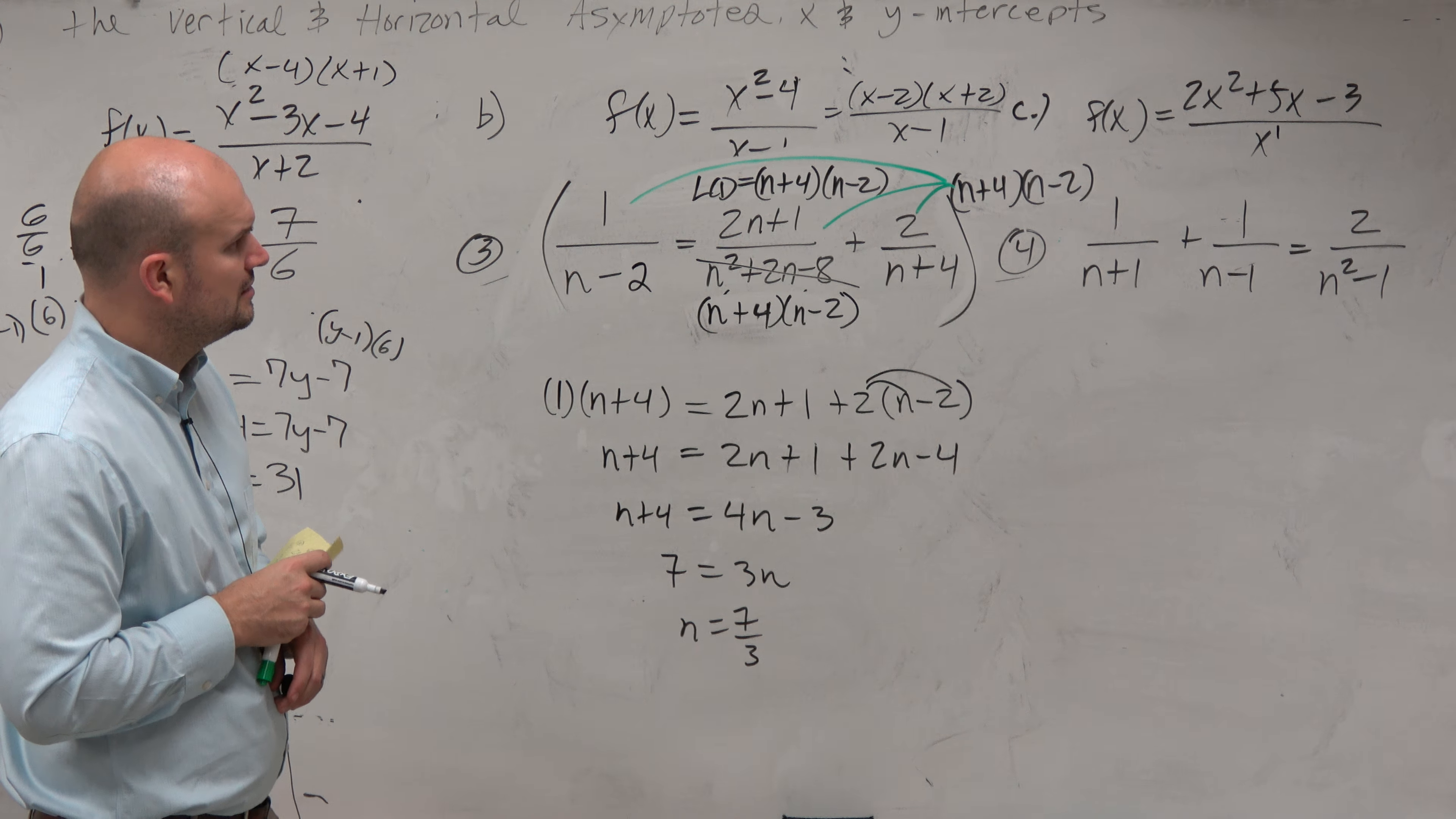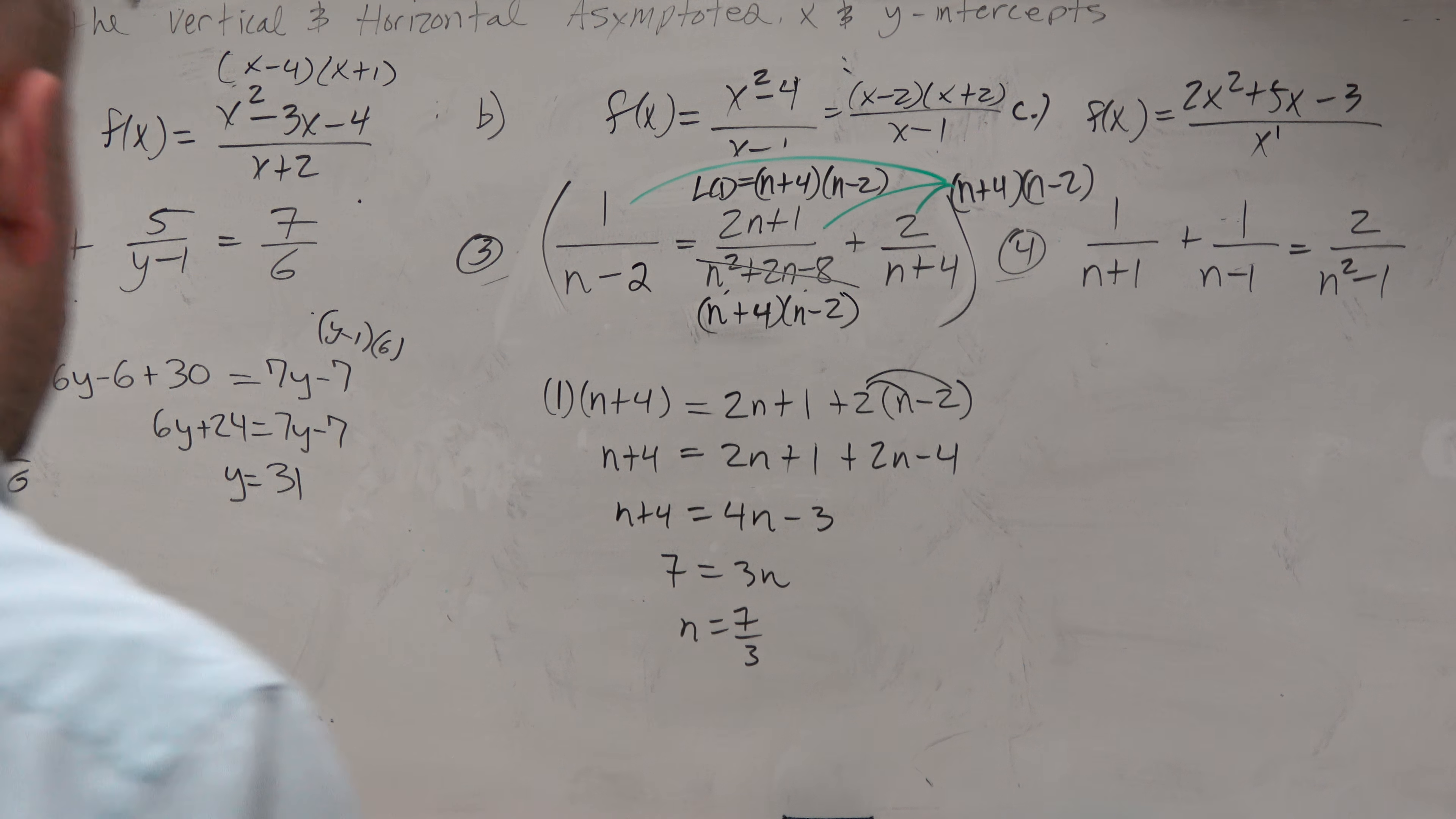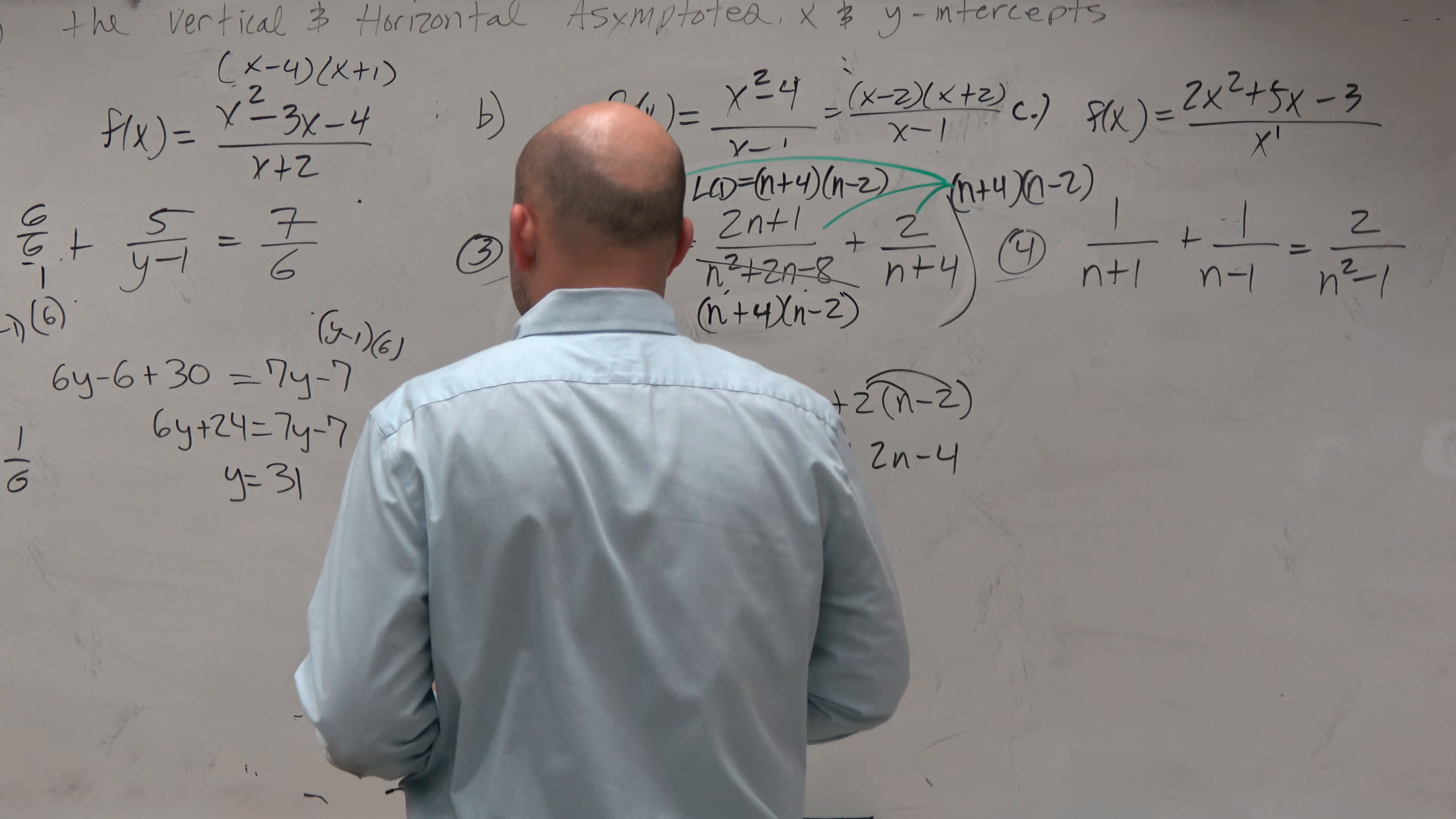OK? And now it's just an algebra problem. So combine your like terms, get them all to the same side. So let's see, that's going to be 4. So n plus 4 is equal to 4n minus 3.